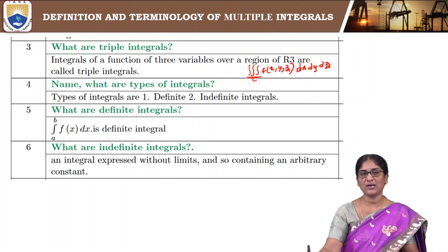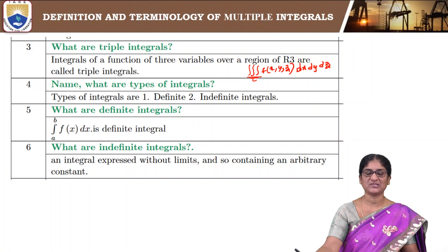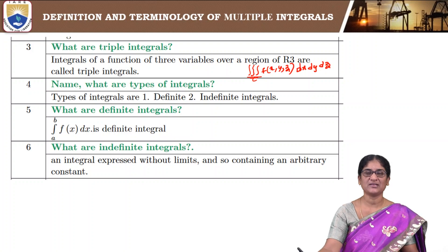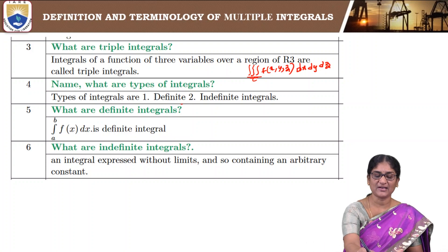Two of the variables may hold variable limits and one will have fixed limits, or two may be fixed and one variable, or all may be fixed limits. Whenever you specify limits for the integral, they are called definite integrals. There are two types of integrals: definite and indefinite integrals.